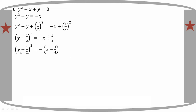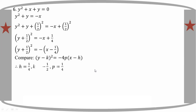Let's compare it to (y minus k) whole square equal to minus 4p times (h minus x). Comparing: h is equal to 1 by 4, k is equal to minus 1 by 2, 4p is equal to 1 by 4, so p is equal to 1 by 16. The graph opens to the left.